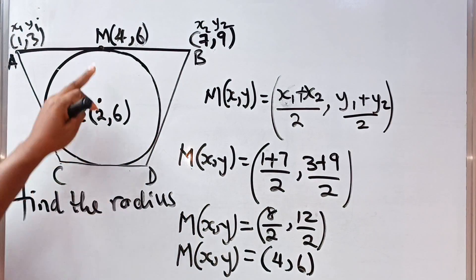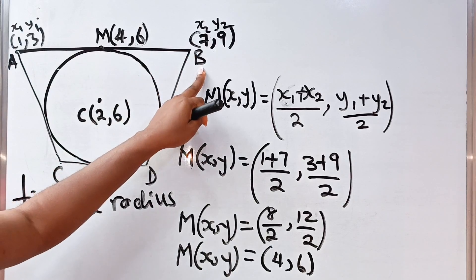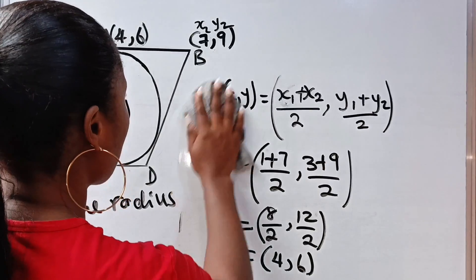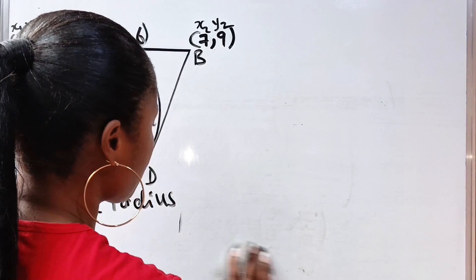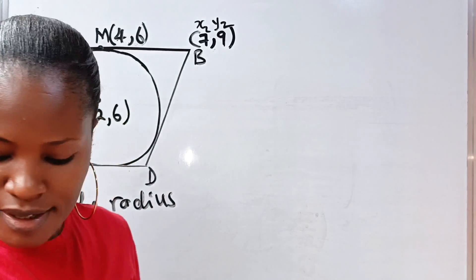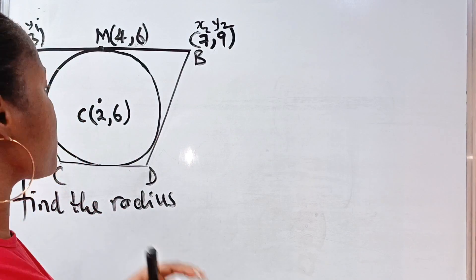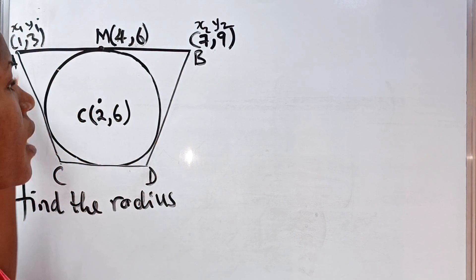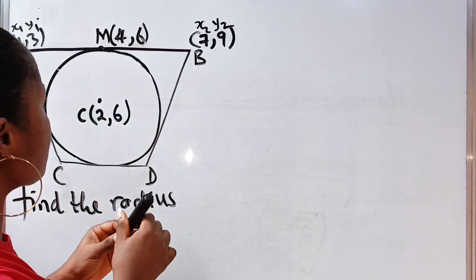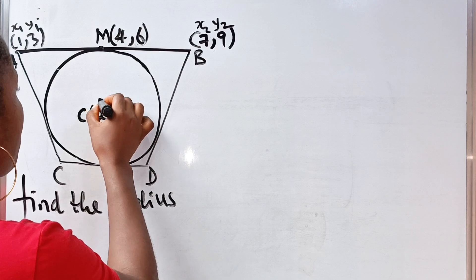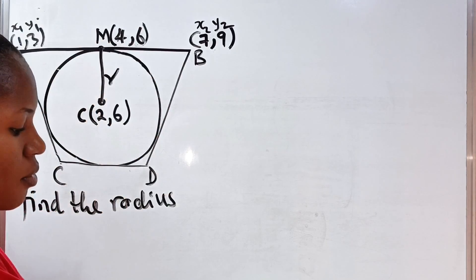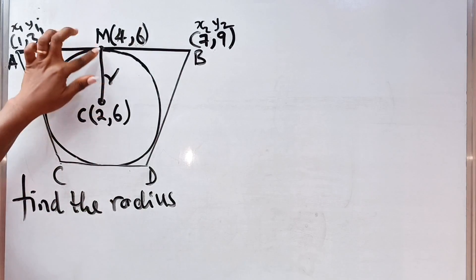Now, we have found the midpoint of A, B. Alright, now, what else do we need to find? We are told to find the radius. And remember, the radius is any straight line from the center of the circle to any part of the circumference of the circle. So, if I decide to draw my straight line from here, being the center to this point, this is my radius R. Now, how do I get the length?